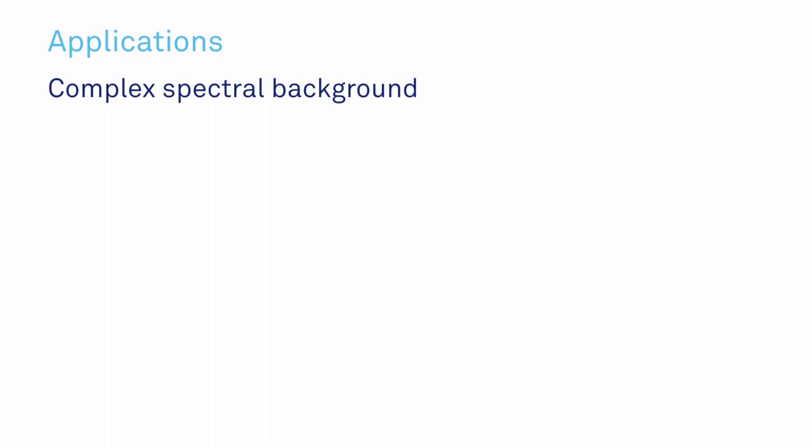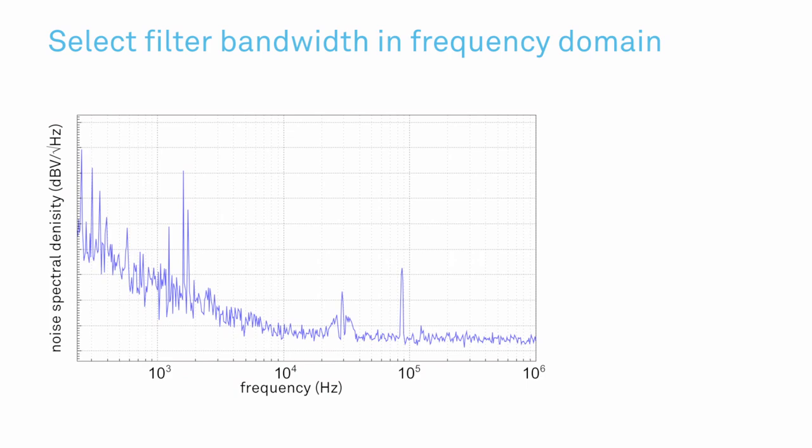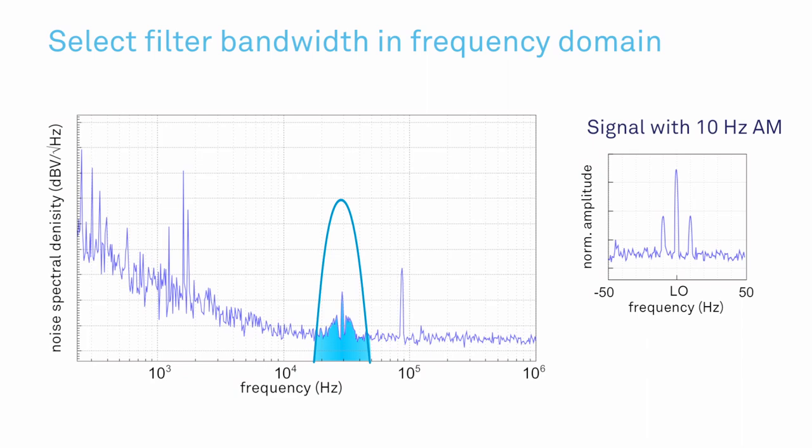In the second situation where we have a more complex spectral background, we select the filter parameters considering the frequency domain. The bandwidth needs to be broad enough to accommodate all spectral components to be measured but small enough to avoid excessive noise.